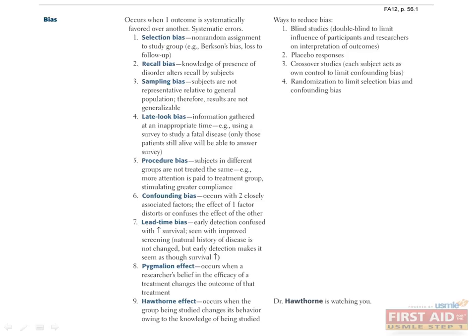There are four main ways to reduce biases in studies. Double-blinded studies can prevent the Pygmalion effect, the Hawthorne effect, and procedure bias. Blinding prevents participants and researchers from influencing the interpretation of outcomes. Placebos can also be used to reduce bias. Crossover studies are those in which each subject acts as their own control, meaning that if group 1 receives a drug and group 2 receives a placebo, at some later point in the study, group 2 would receive the drug and group 1 would receive the placebo. In this way, both group 1 and group 2 act as their own controls, and many different forms of bias are eliminated in this manner. Finally, randomization is very effective at reducing selection bias and confounding bias.